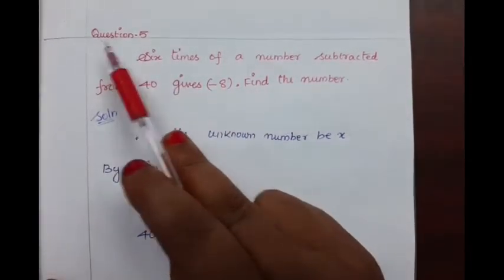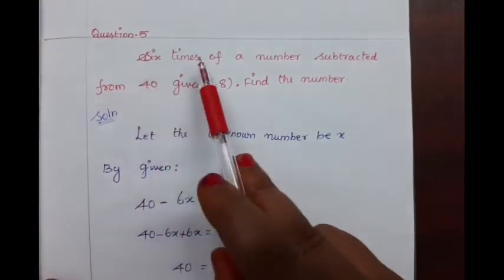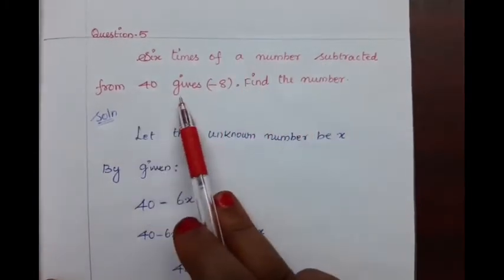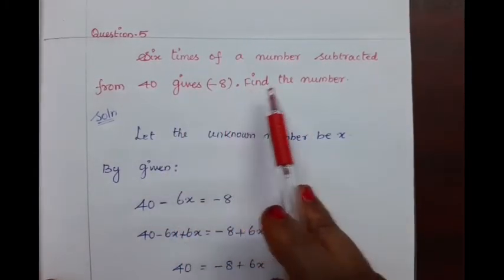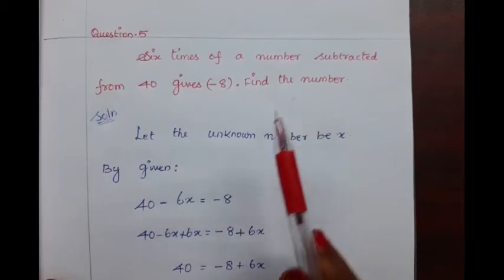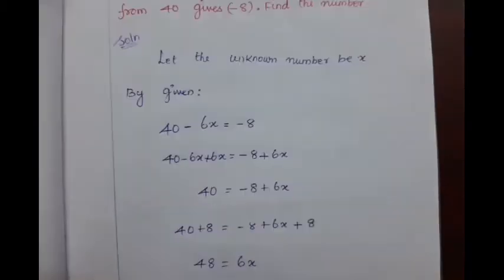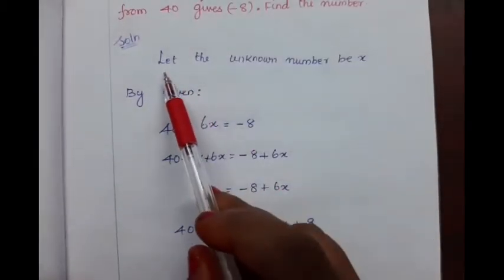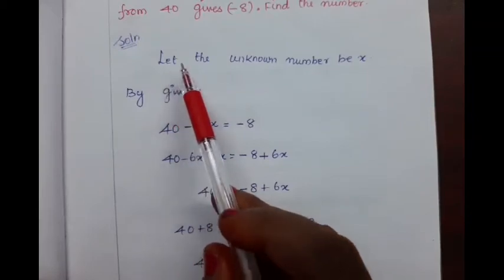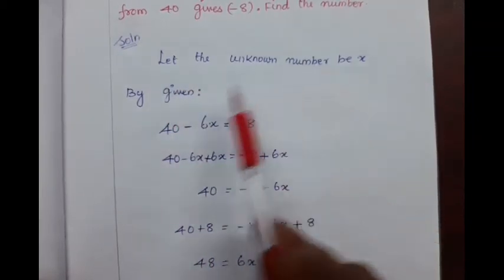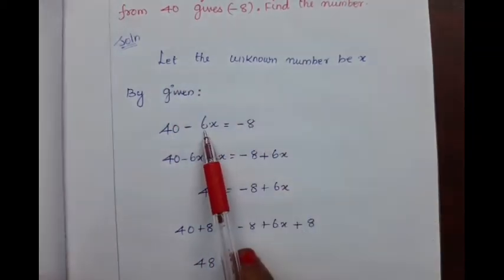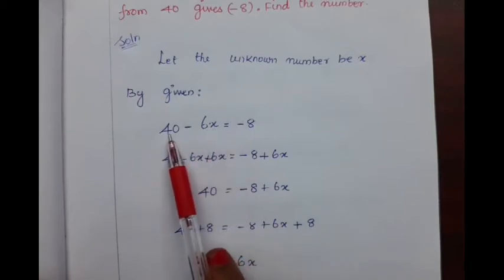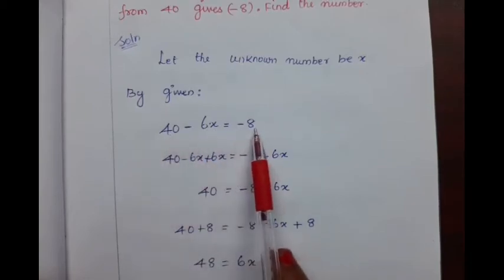Question number 5: 6 times of a number subtracted from 40 gives minus 8. Find the number. To find the number, let us take the unknown number as x. By given in the question, 6 times x is subtracted from 40 gives minus 8.